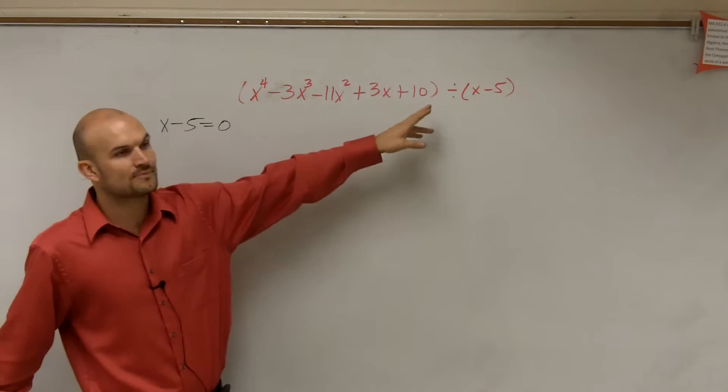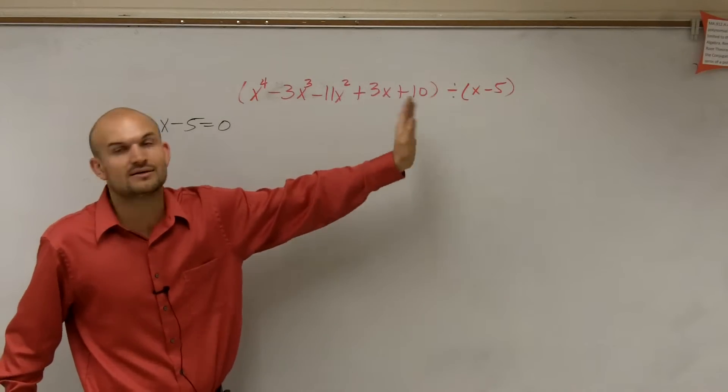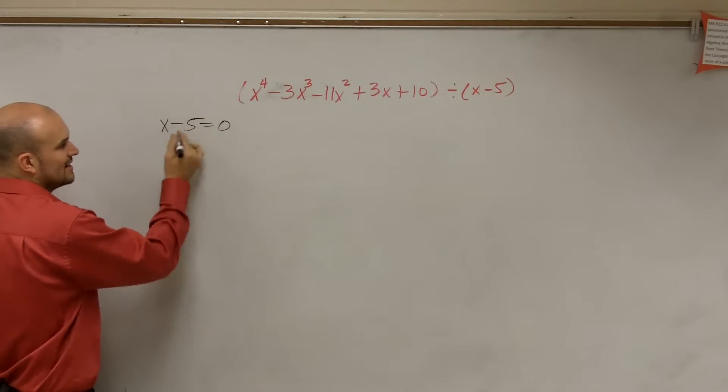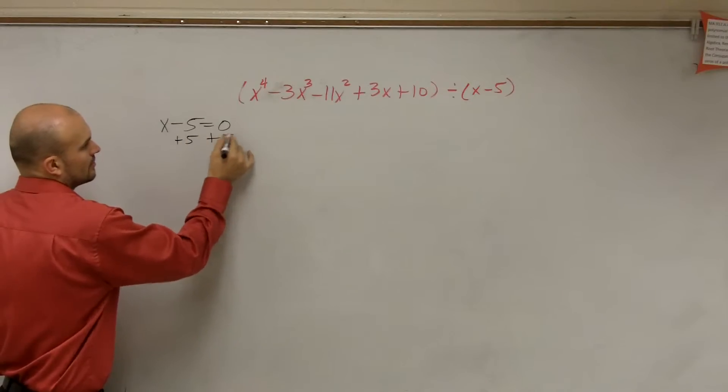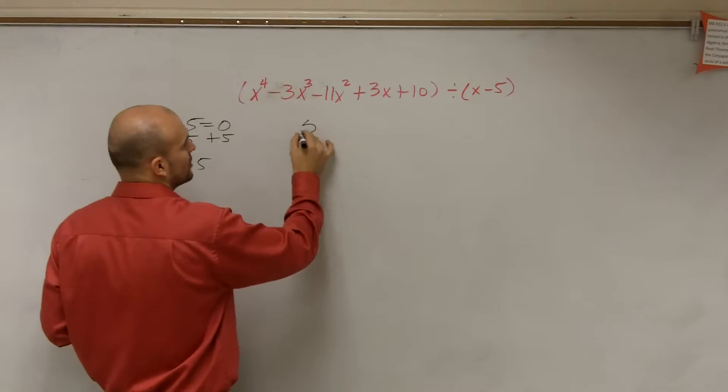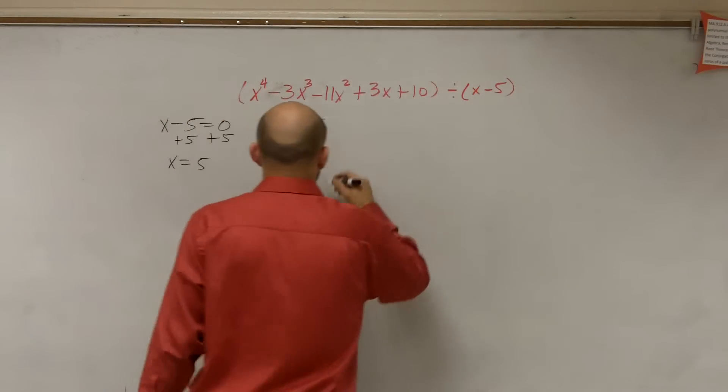But remember when we talked about when we had like 2x minus 5? Right? You got to make sure you include that 2 into your problem. So just take whatever your divisor is, set it equal to 0, and then that's going to be what we call your zero, your factor, or your root. And that's what you're going to divide by.